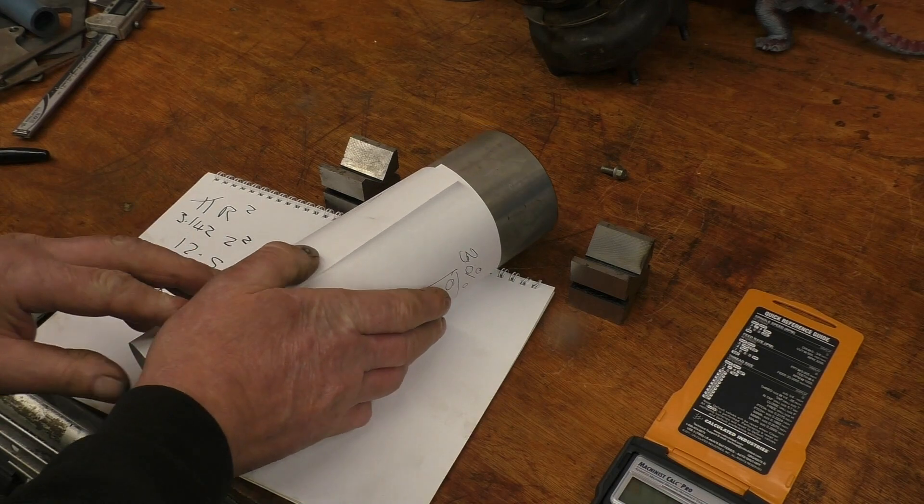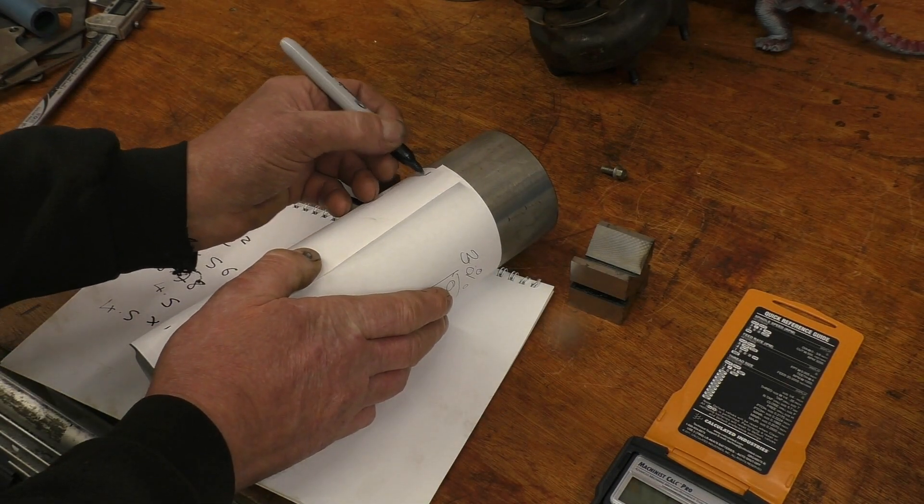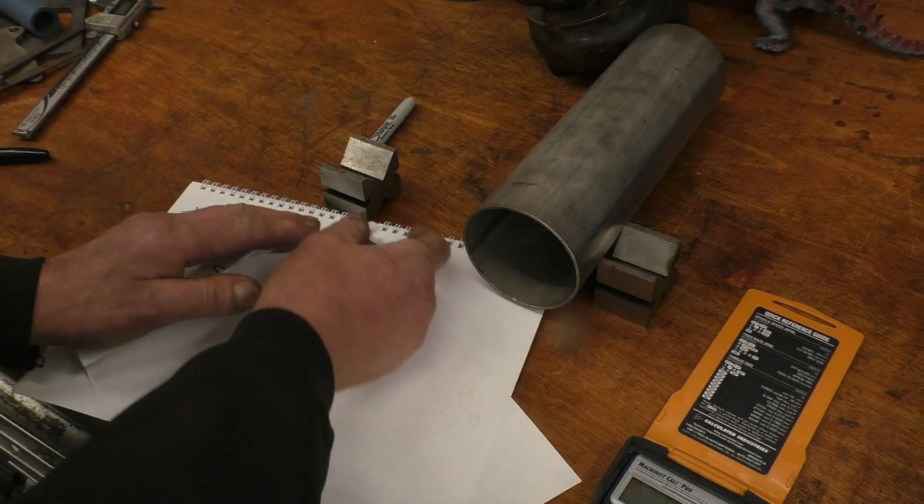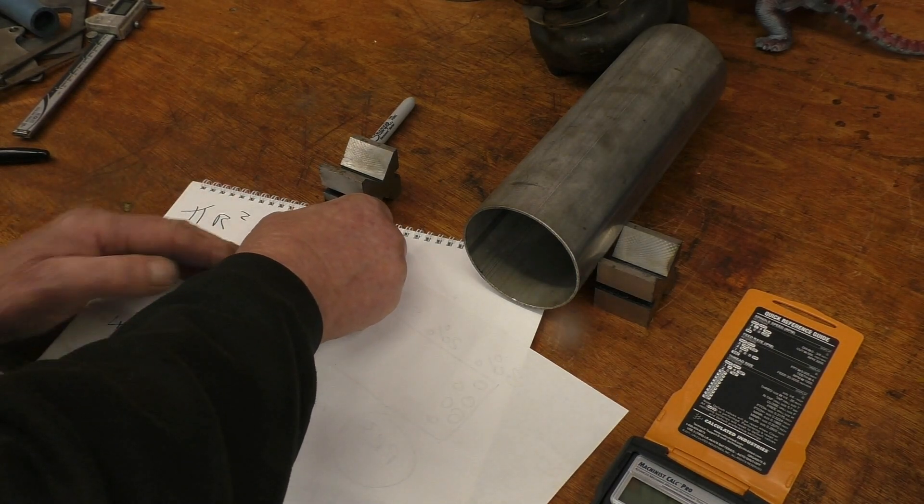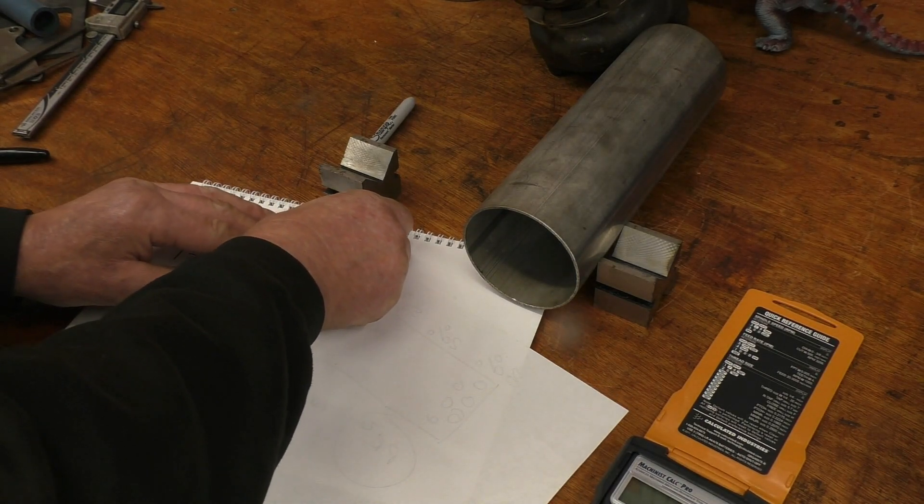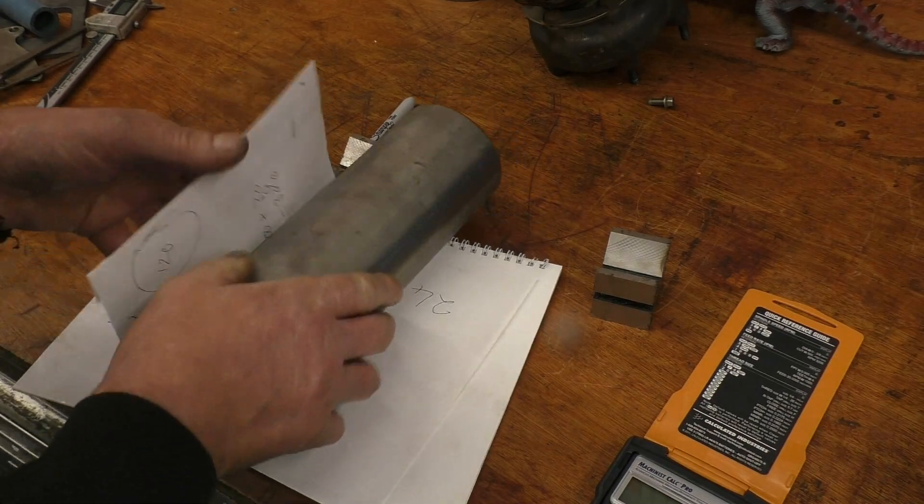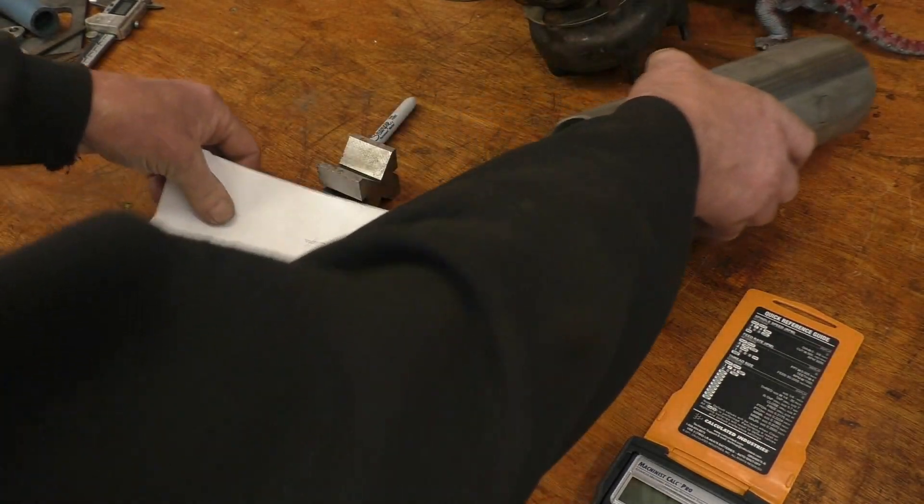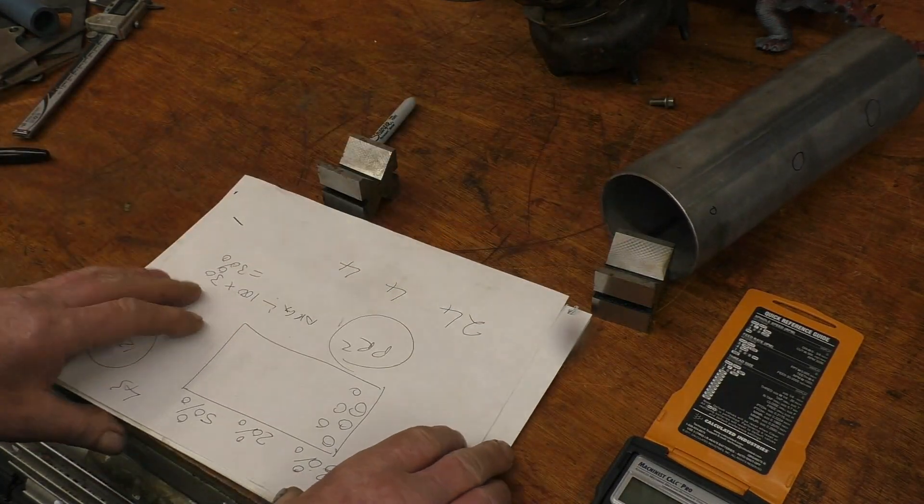So all we'll do is simply mark a piece of paper. See that goes around here once like that, then we'll just divide that into 12, put some marks on, tape it there, and then we'll drill the holes.